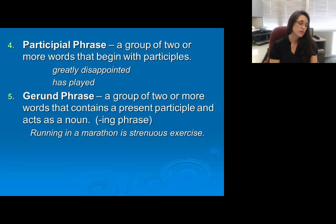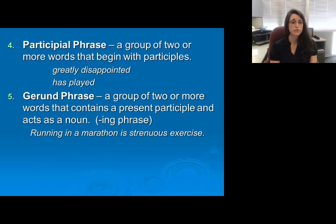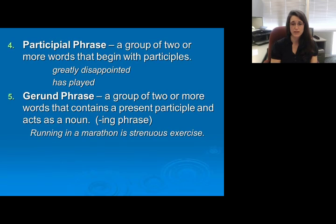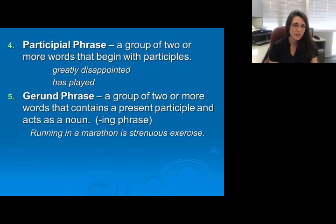Then a gerund phrase. Gerund phrases are very tricky — a lot of times these look like verbs but they're actually not. They're a group of words that start with an -ing modifier and act as a noun. A group of two or more words that contains a present participle (that's our -ing) and acts as a noun. So 'running in a marathon is strenuous exercise' — 'running in a marathon' is the gerund phrase. 'Is strenuous exercise' is our complete sentence. 'Running in the marathon' is our gerund phrase — it's an activity we are doing, but we need 'is strenuous exercise' in order to complete the sentence.